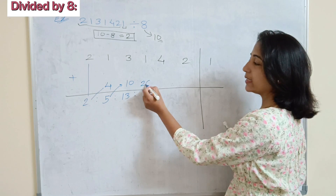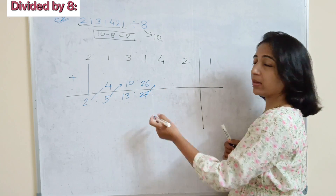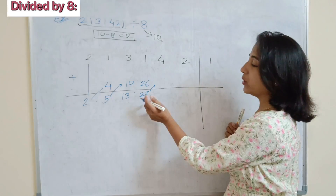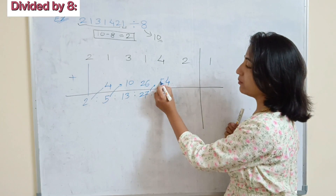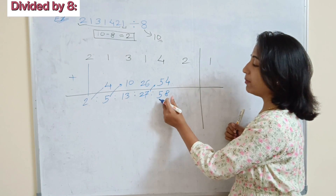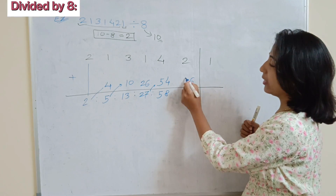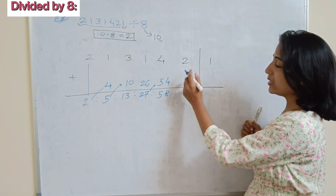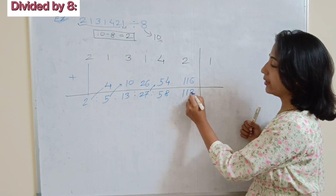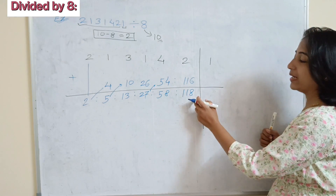Double of 13 is 26; add to next: 26 plus 1 is 27. Double of 27 is 54; add to next: 54 plus 4 is 58. Double of 58 is 116; add 2: we get 118. Now we need a single digit so we proceed to the next step.